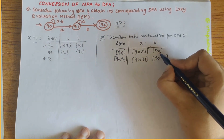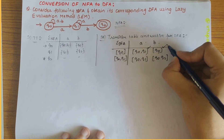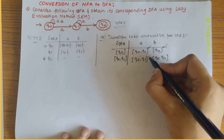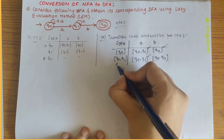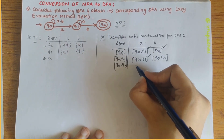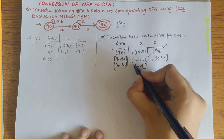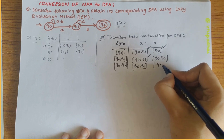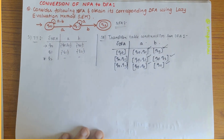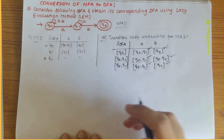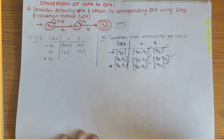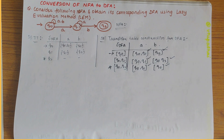q0 was already defined earlier, so we put a tick mark. {q0, q1} is also already defined. Next we define {q0, q2}: on a it gives {q0, q1}, and on b it gives q0 itself. All states are now defined. The start state is q0 and the accepting state is q2 — wherever q2 appears, we add a star mark.